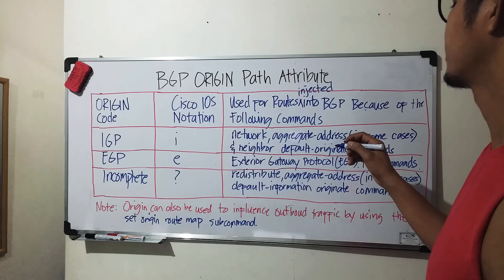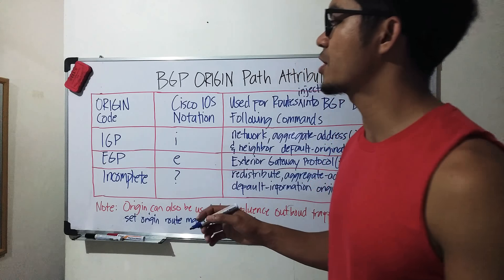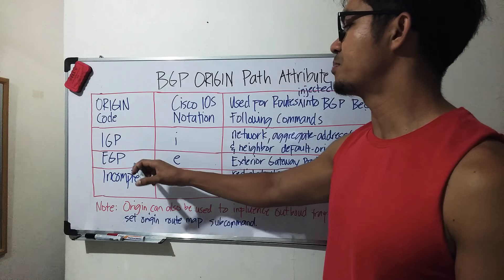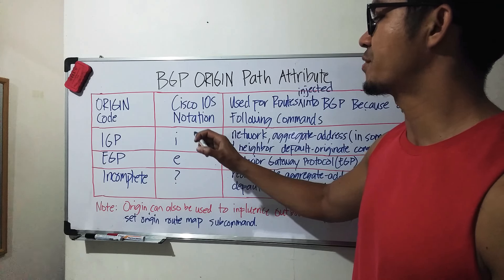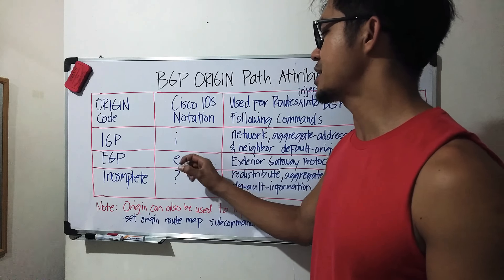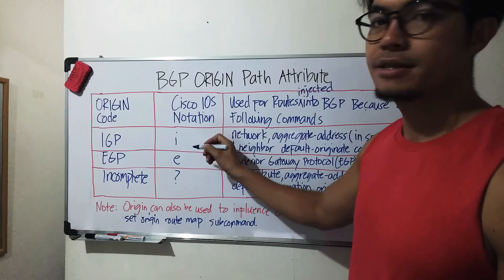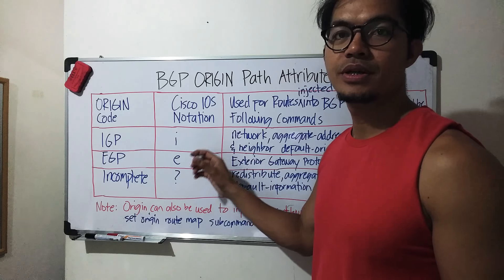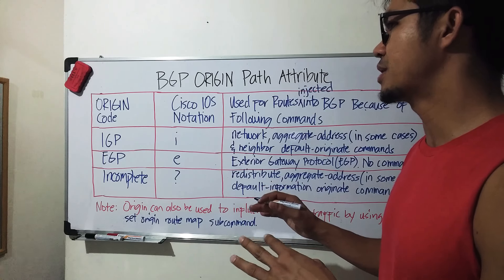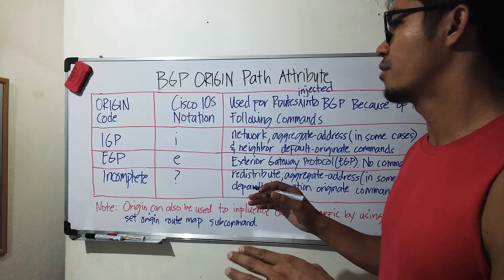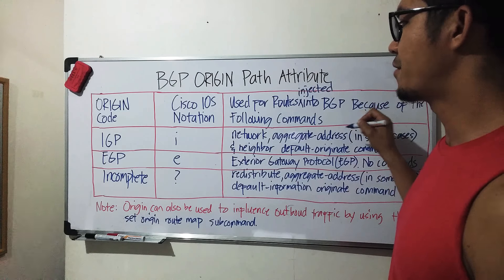There are three origin codes: IGP, EGP, and Incomplete. The Cisco IOS notation for IGP is 'i', for EGP is 'e', and for Incomplete it's a question mark '?'. These are the values you will see if you do a 'show IP BGP' on a router, and they appear on the far right side.